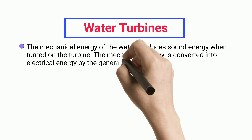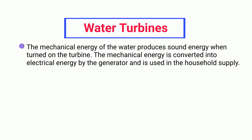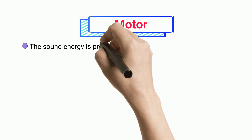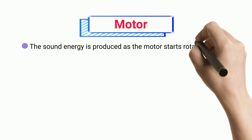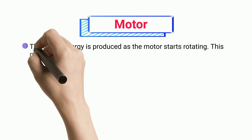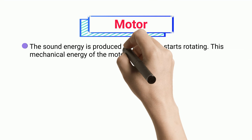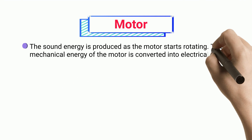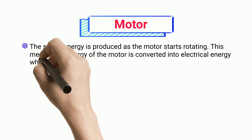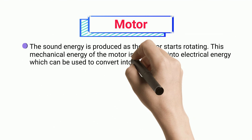Water turbines: The mechanical energy of water produces sound energy when the turbine is turned on. The mechanical energy is converted into electrical energy by the generator, which is used in household supply.